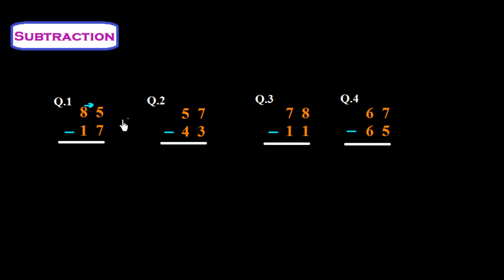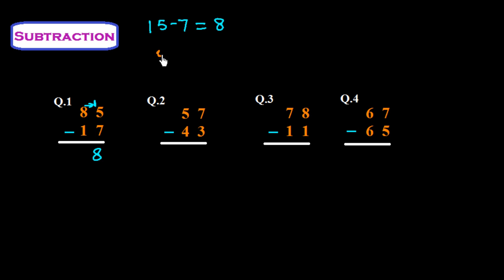After borrowing, we have 15 here, and 15 minus 7 is 8. Because we took 1 away from 8, we now have 7 in the tens place, and 7 minus 1 is 6. So we get 68 as the answer.